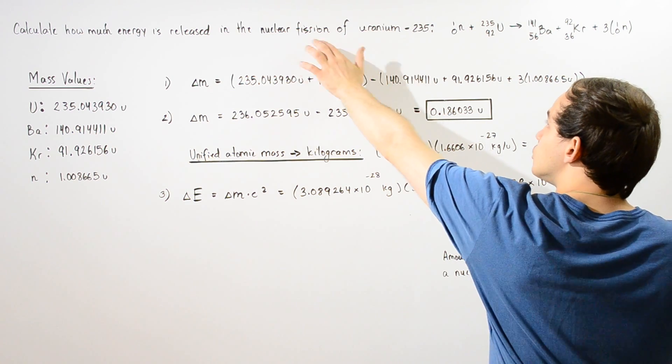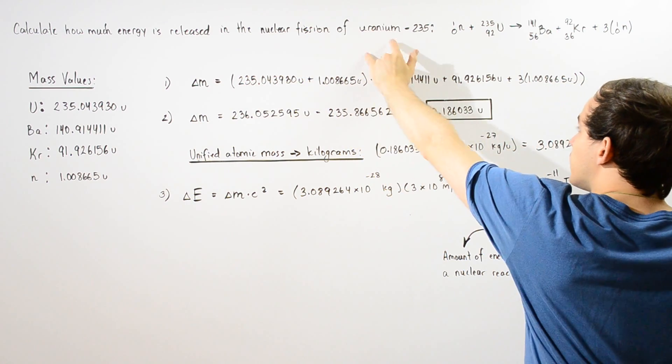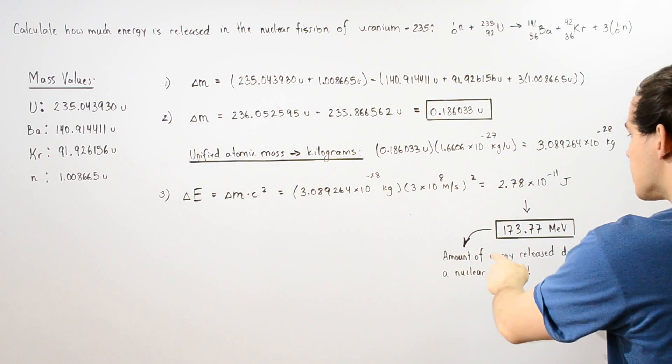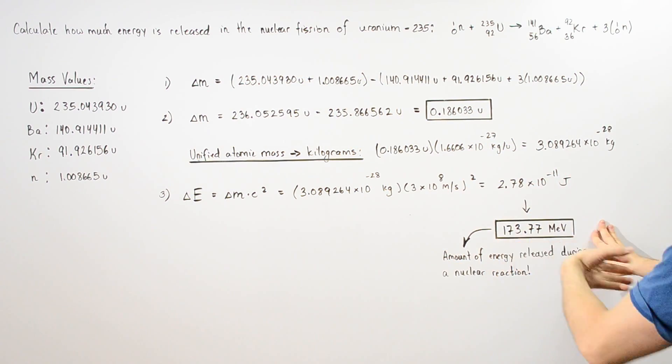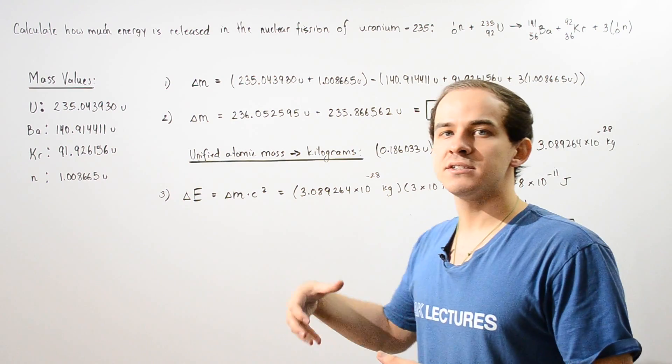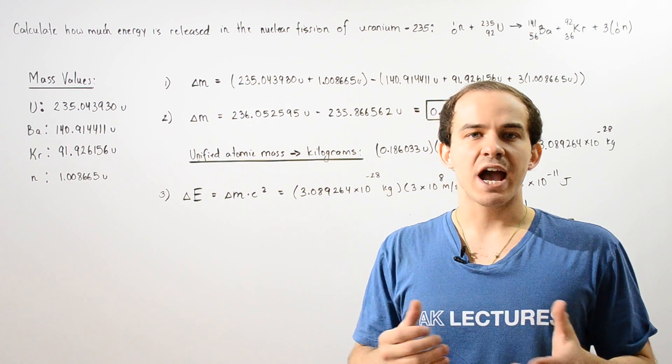So when our nuclear fission reaction of uranium-235 occurs, this is how much energy is released into the surroundings, and this is a relatively large amount of energy compared to other nuclear reactions.